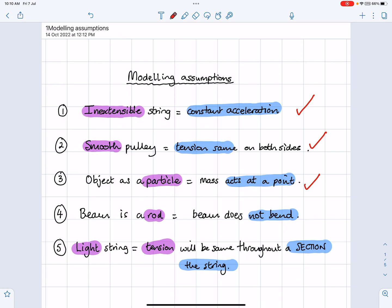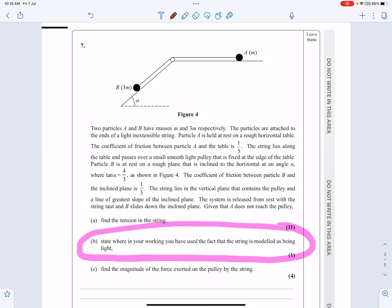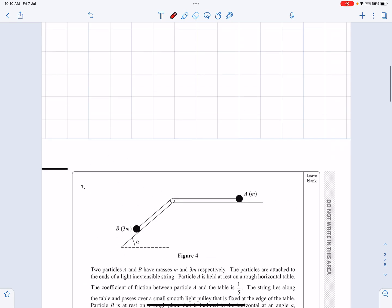But basically, what we've got here, let's go and actually have a look at the sort of question that we get. It's one of these sorts of questions here, where normally it's only a one marker, and it will ask you to consider the model that's been set up. So in this case, it says state where when you're working, you've used the fact that this string is modeled as being light. Okay, so if the string is light, we can come back to this list now.